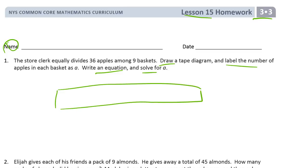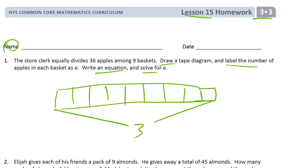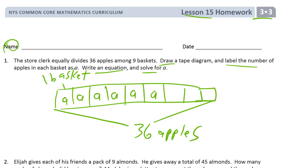There are 9 baskets — 1, 2, 3, 4, 5, 6, 7, 8, 9 baskets. And the whole thing is going to have 36 apples. This is 1 basket. There's A — A apples in each basket. And here's our equation.